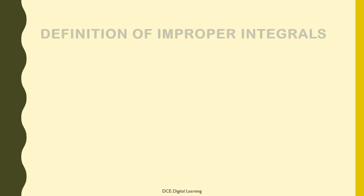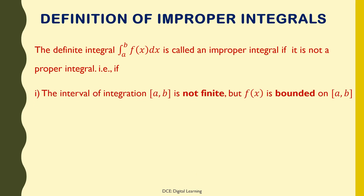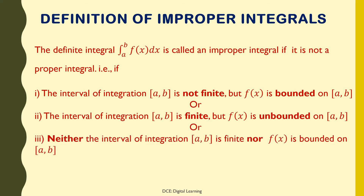Now, the definition of improper integrals. The definite integral ∫f(x)dx from a to b is called an improper integral if it is not a proper integral — that is, if the interval of integration [a, b] is not finite but f(x) is bounded on [a, b]; or [a, b] is finite but f(x) is unbounded on [a, b]; or neither the interval [a, b] is finite nor f(x) is bounded on [a, b].